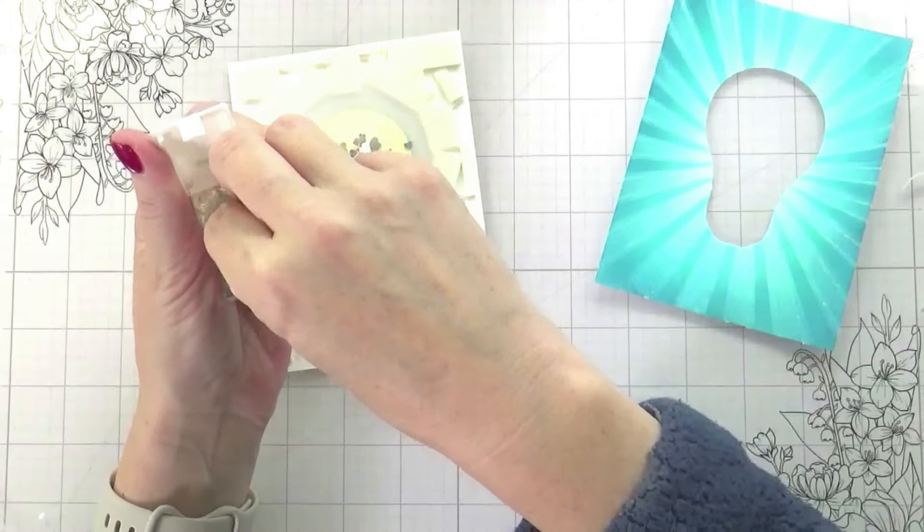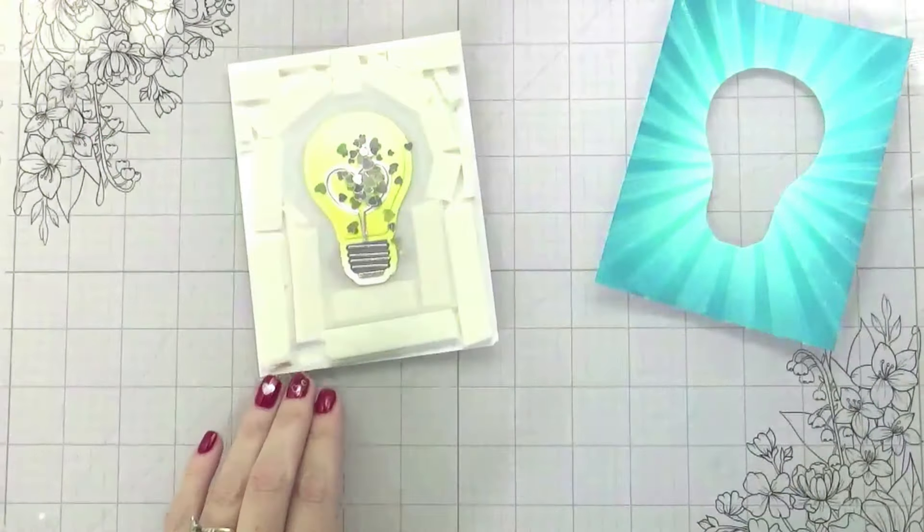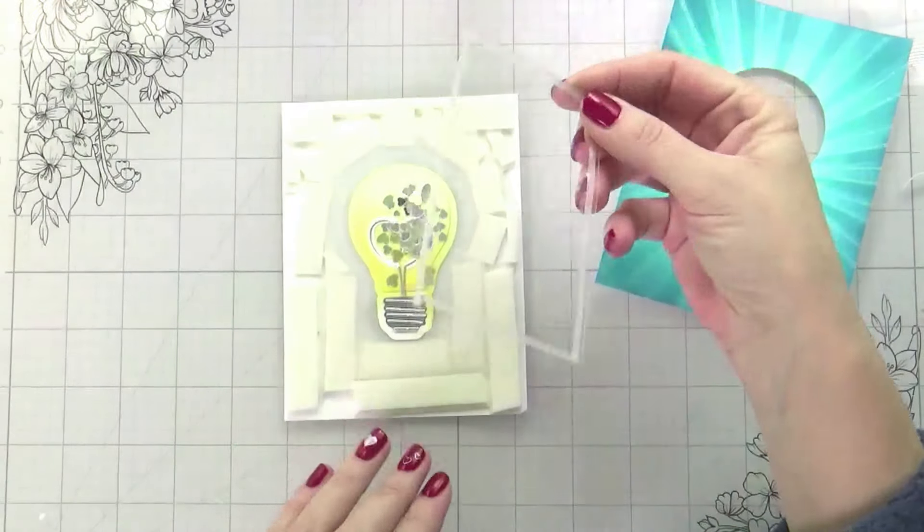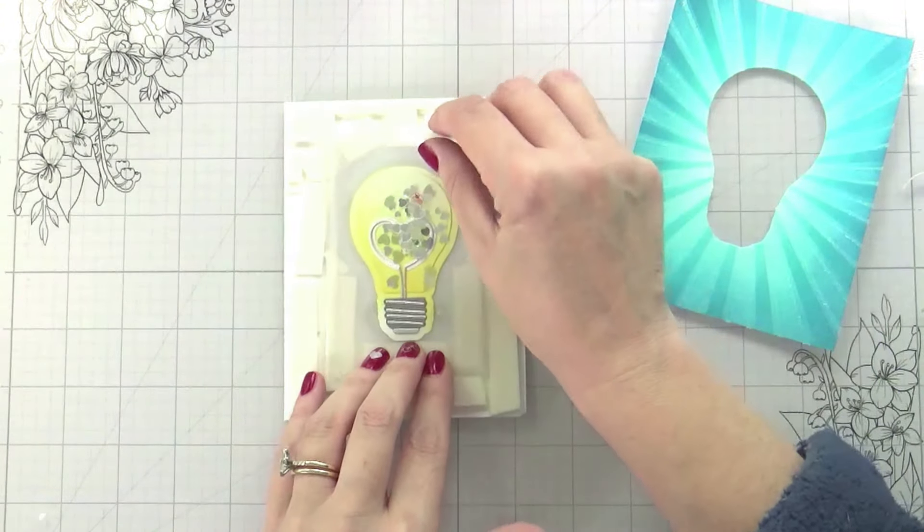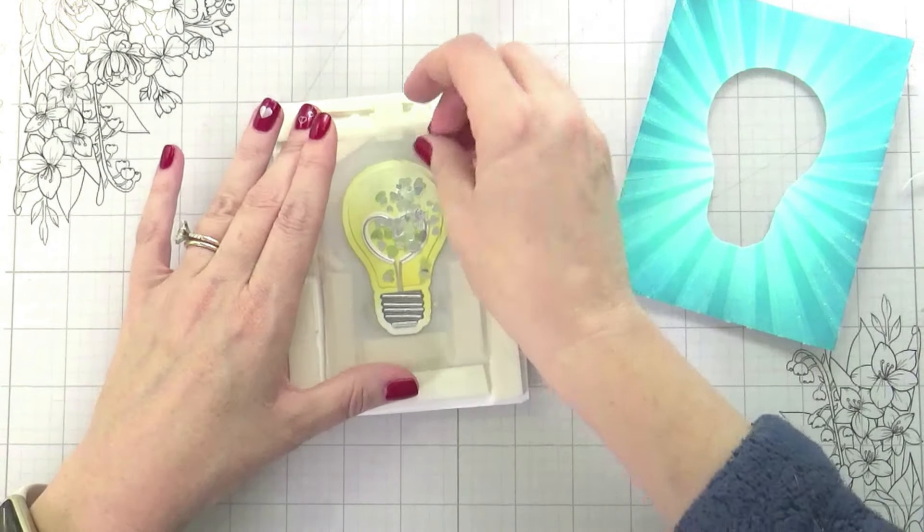I chose to do these flat little confetti hearts because again, I knew I wasn't going to have a lot of clearance for my shaker, so I'm looking for something that is super flat and these little confetti pieces will work. I should have spread them out before I went to stick my window on, but I didn't.